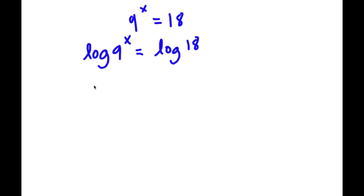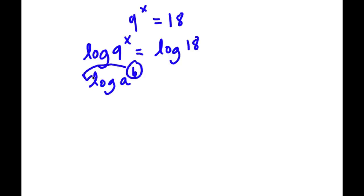An important property of logarithms is that if we have something in the form log a to the power of b, we can actually move this exponent b to the front of the logarithm. So this is going to equal b times log a.